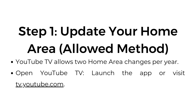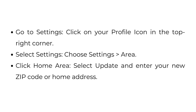Open the YouTube TV app or visit tv.youtube.com. Go to settings by clicking on your profile icon in the top right corner. Select settings, then choose area. Click home area, then select update and enter your new zip code or home address.